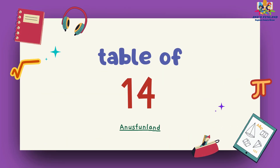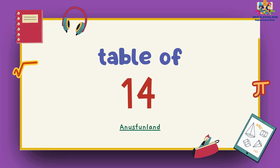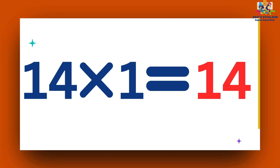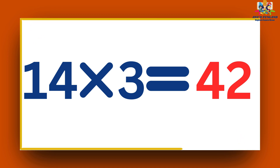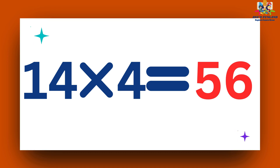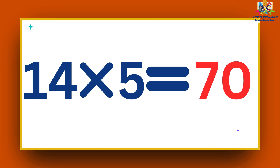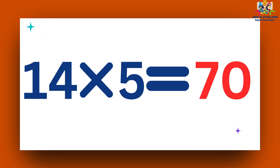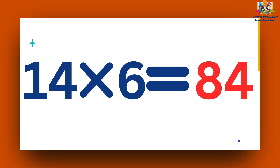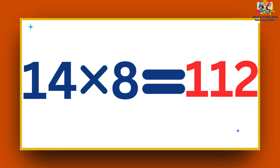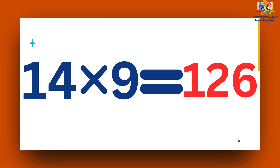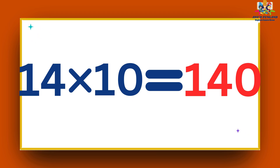Now we will learn table of 14. 14 ones are 14. 14 twos are 28. 14 threes are 42. 14 fours are 56. 14 fives are 70. 14 sixes are 84. 14 sevens are 98. 14 eights are 112. 14 nines are 126. 14 tens are 140.